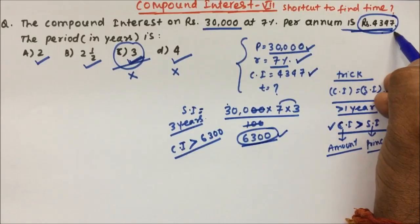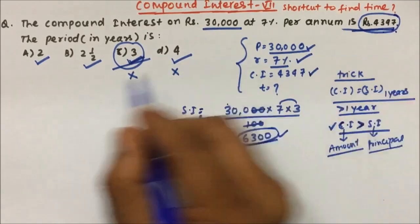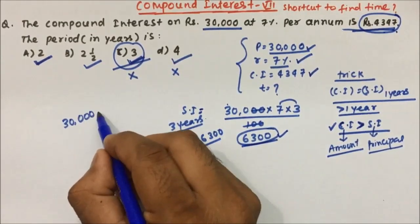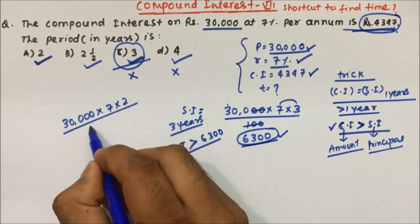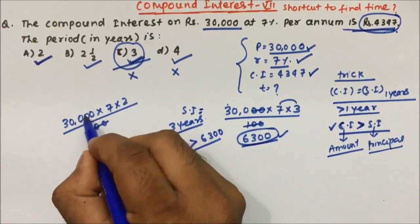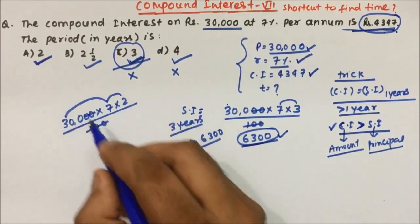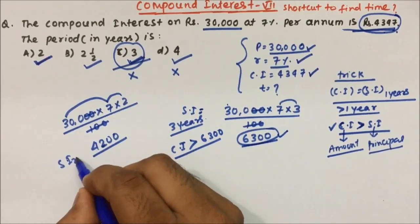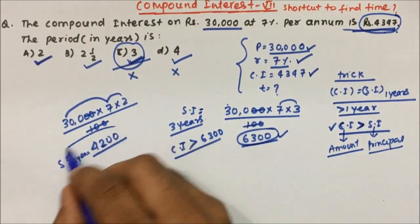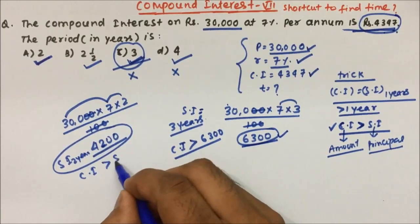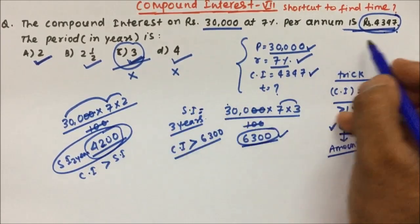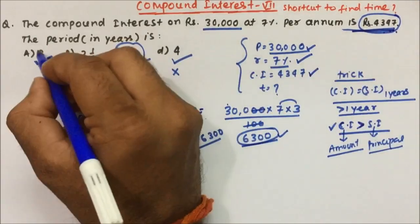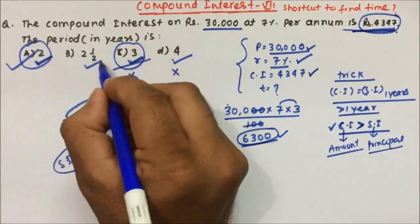Now let's try two years. Simple interest = 30,000 × 7 × 2 ÷ 100. The two's cancel: 2 × 7 = 14, and 14 × 300 = 4200. So simple interest for two years is 4200, meaning compound interest will be a little more than 4200. The compound interest given in the question is 4347, so yes, the answer will be option A — two years.